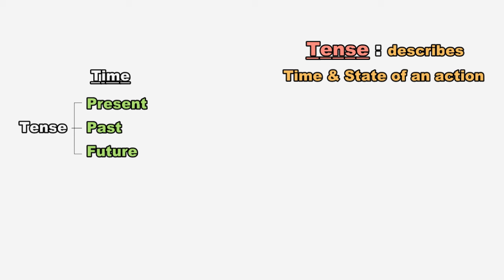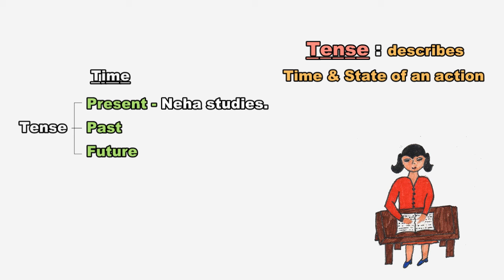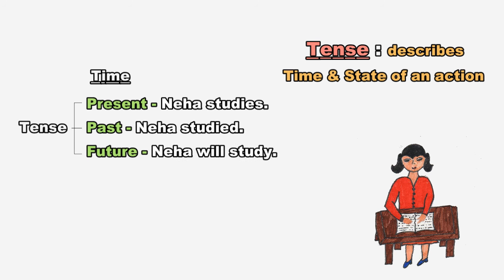Inhi examples se samajhte hain. Jaise: 'Neha studies' — Neha padhai karti hai. This sentence is in present tense. 'Neha studied' — Neha padh chuki hai. This sentence is in past tense. 'Neha padegi' — This sentence is in future tense.